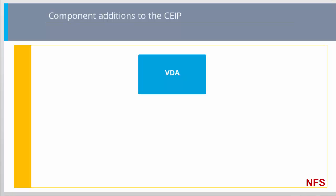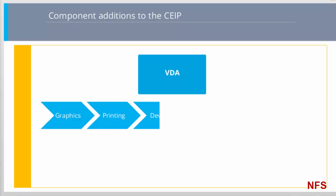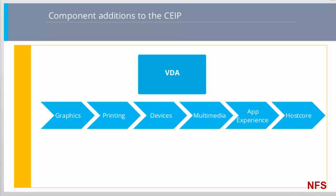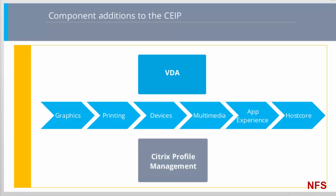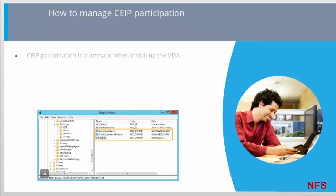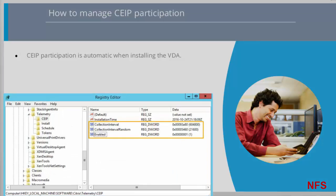As part of the VDA CEIP data collection, anonymous statistics and usage information for graphics, printing, devices, multimedia, app experience, and host core is periodically collected and sent. Also, Citrix Profile Management can now participate in the CEIP. Customers automatically participate in the CEIP when installing the VDA on a machine.